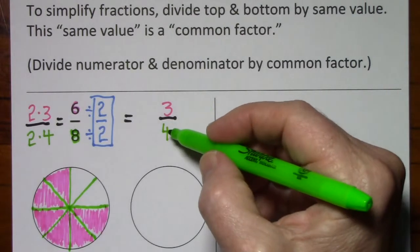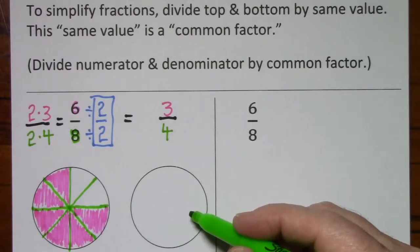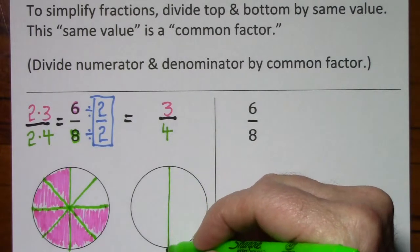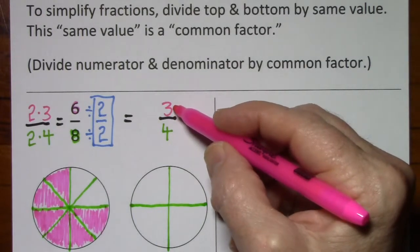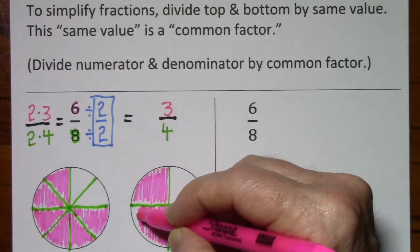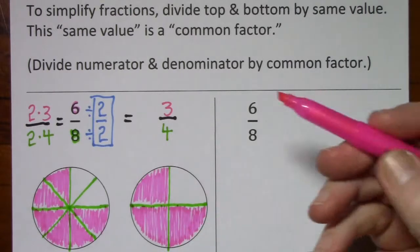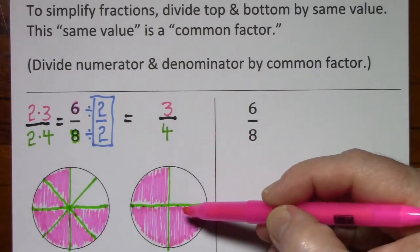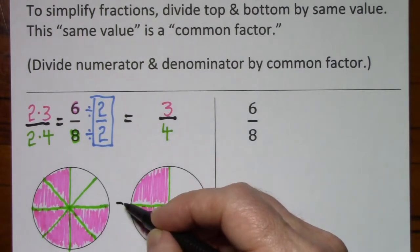Now for 3 fourths, I first look at the denominator of 4. This tells me to divide the whole into fourths. The numerator of 3 tells me to shade in 3 fourths. So I've represented 3 fourths with this circle. And visually you can see that 6 eighths is the same amount of stuff as 3 fourths. So I could say that these are equal.